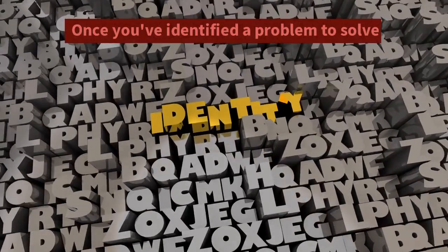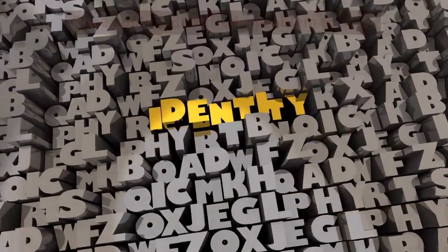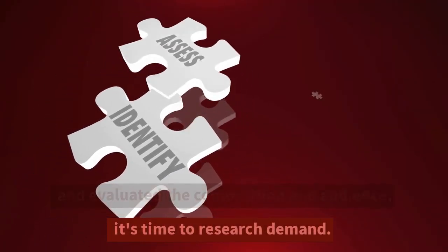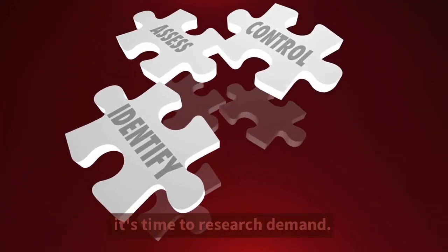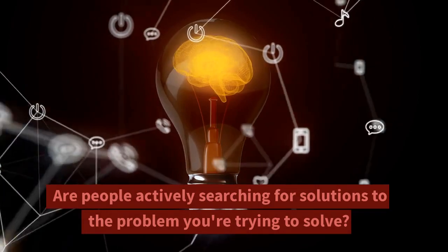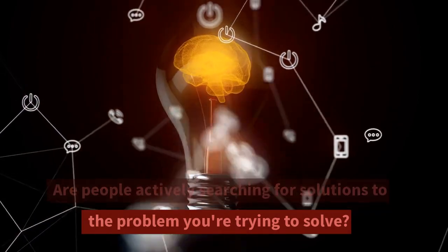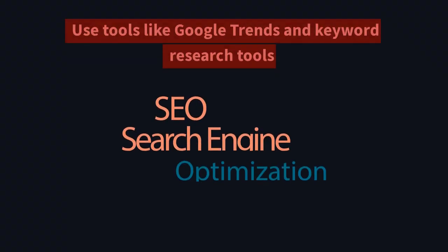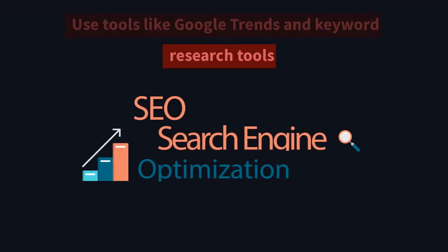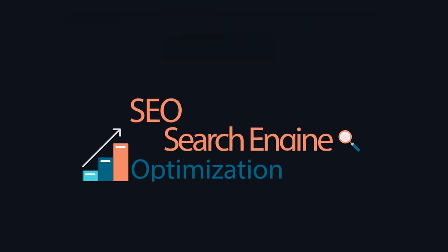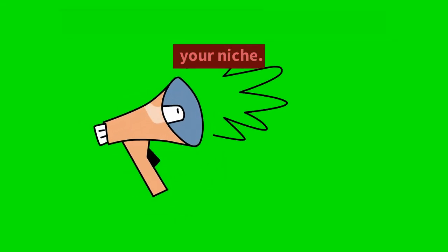R - Research demand. Once you've identified a problem to solve and evaluated the competition and audience, it's time to research demand. Are people actively searching for solutions to the problem you're trying to solve? Use tools like Google Trends and keyword research tools to see how much search volume there is for your niche.